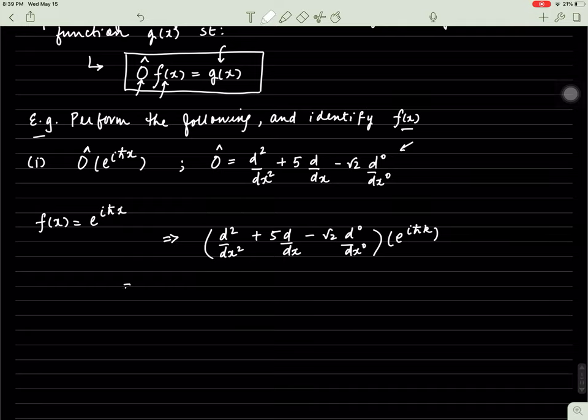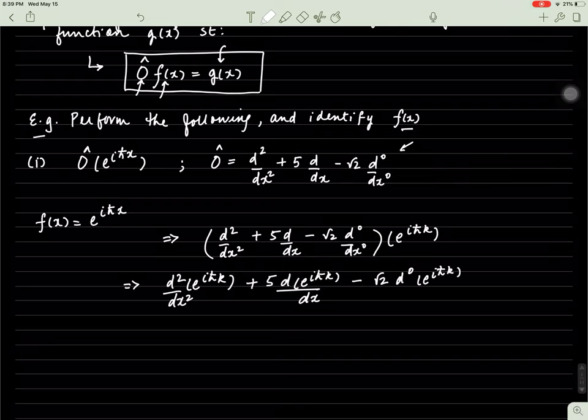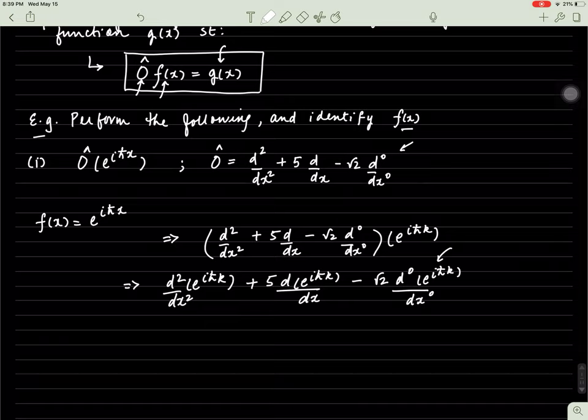That means we will first have to take the derivative of this function two times, multiply the function by five and then take its derivative one time, and then take the derivative of the function zero times and multiply whatever we get by the square root of two. I brought up this kind of example to highlight something that we'll be using later on.